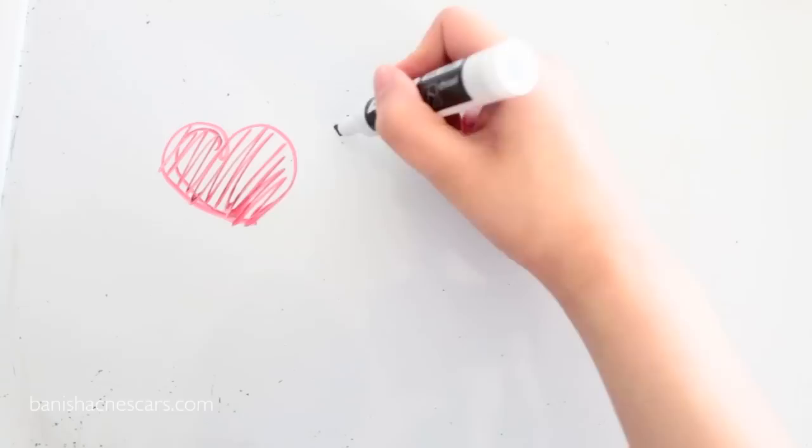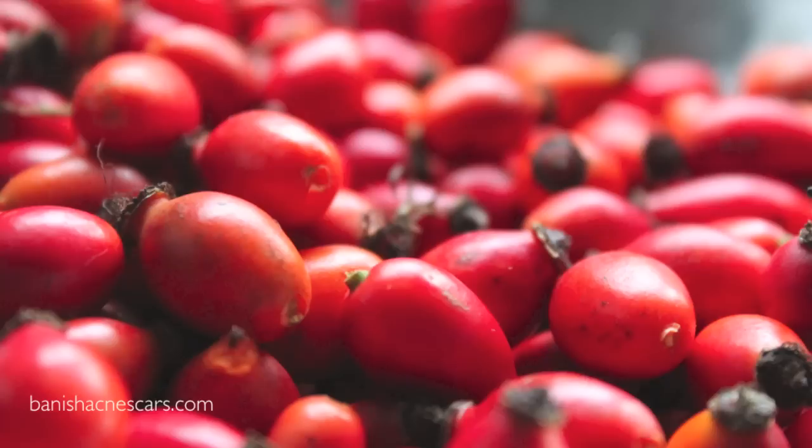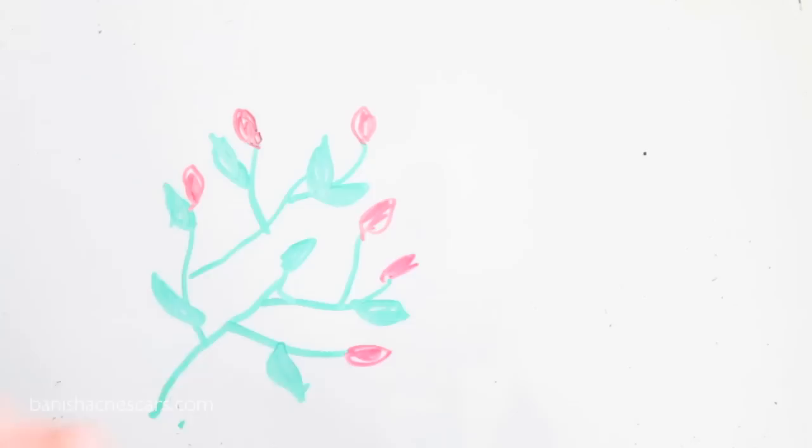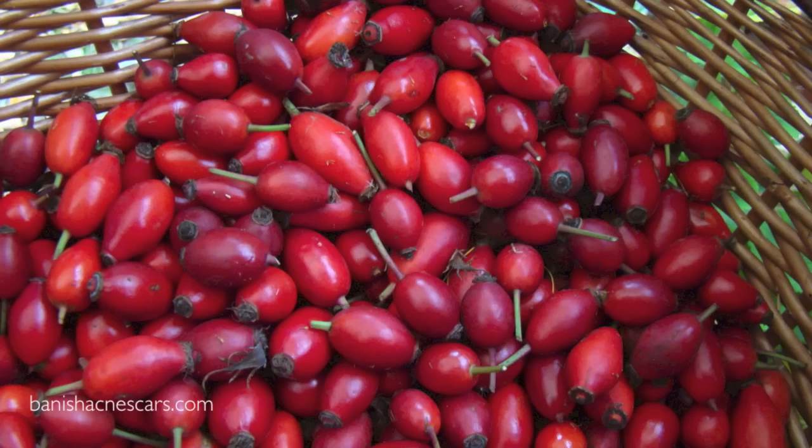If you're looking for something gentle to fade dark spots and scars on your skin, rosehip oil is one of the best things that you can use. So how does rosehip work? Rosehip contains a large amount of vitamin A.